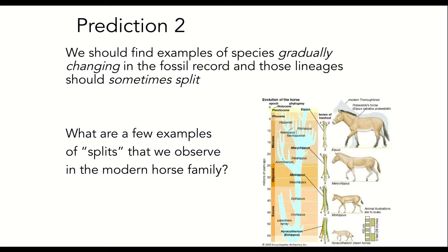The second prediction is that the fossil record should show gradually changing species and evidence of lineages splitting over time to form new lineages. If we look at the evolution of the modern horse, we see precisely such sequences in the fossil record. Hyrachotherium, or the dawn horse, was a small, dog-sized animal with three padded hoof toes on its front feet. Over time, the single-toed hoof of the modern horse was gradually selected for, as seen in the fossil record, in which bones of the forelimb are shown to fuse and recede in the transitional fossil species linking the modern horse to Hyrachotherium.